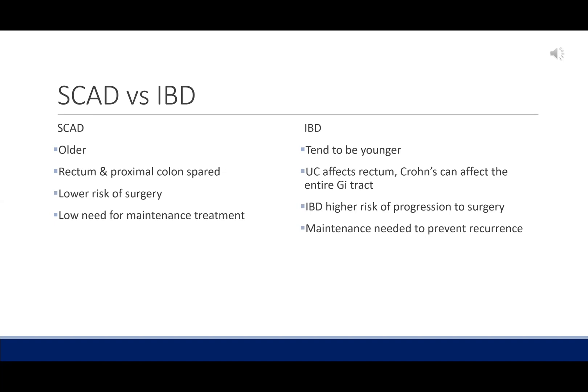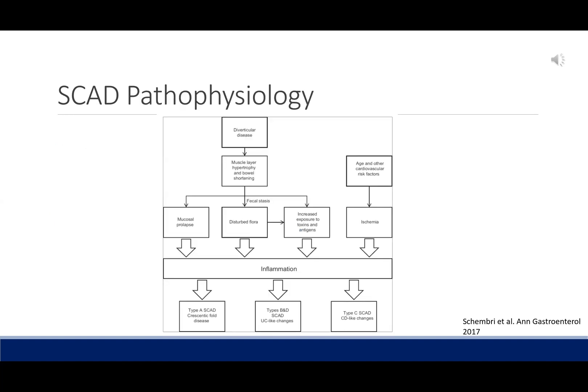SCAD patients tend to be older than IBD patients. They have the rectum and proximal colon spared — UC affects the rectum, and Crohn's can affect the whole GI tract. SCAD patients have a lower risk of surgery than IBD patients and also have a lower need for maintenance treatment. The pathogenesis is multifactorial, including mechanical factors such as mucosal prolapse, disturbed flora with increased exposure to toxins and antigens, as well as age, cardiovascular risk factors, and ischemia — all culminating in inflammation leading to different types of SCAD.